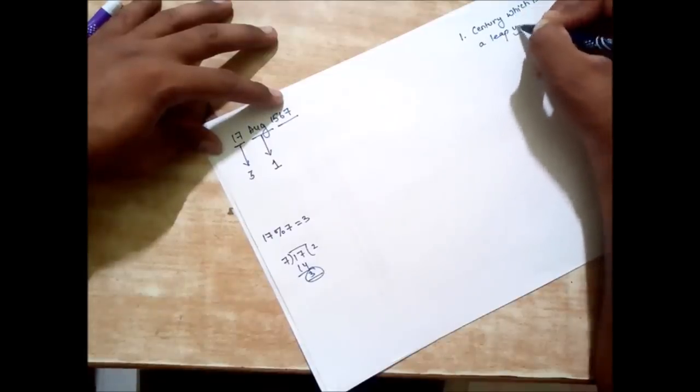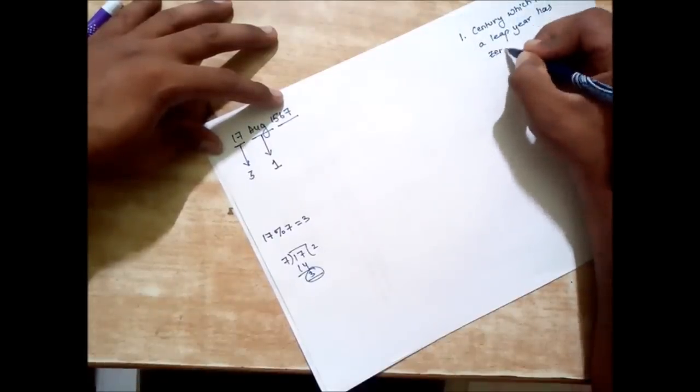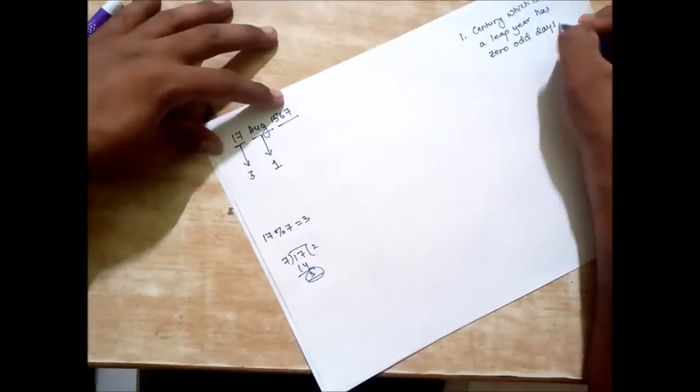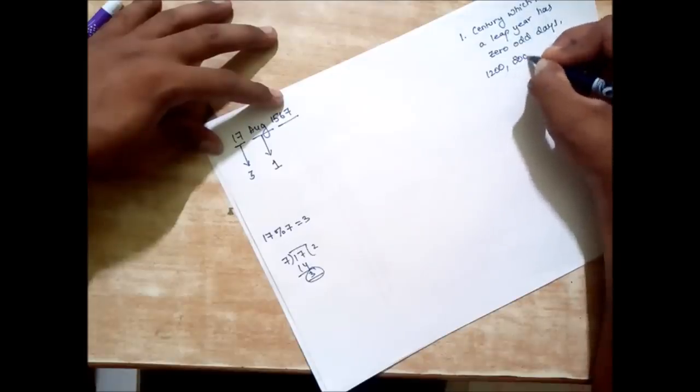Before that we need to remember three things. Number one: a century year which is a leap year has zero odd days. That means years like 1200, 800, 2000 etc. have zero number of odd days.